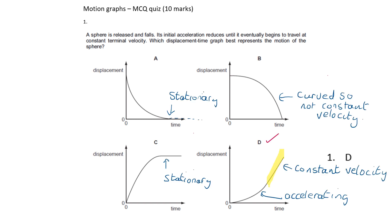The answer is D. The first part of the graph shows that the object is accelerating, which is what we're told in the description — its initial acceleration reduces until it eventually travels at constant terminal velocity. The second section of the graph is a straight line, which is the point where it has reached constant terminal velocity.